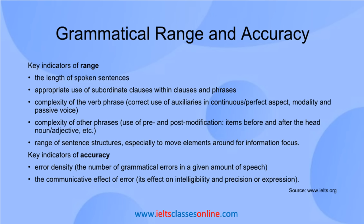Key indicators of range are the length of spoken sentences, appropriate use of subordinate clauses within clauses and phrases, complexity of the verb phrase, correct use of auxiliaries in continuous or perfect aspect, modality and passive voice, and complexity of other phrases — use of pre- and post-modification, items before and after the head noun, adjective, etc. — as well as range of sentence structures, especially to move elements around for information focus.